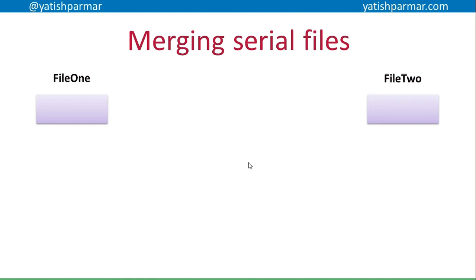So first of all, if you want to merge two serial files, remember that the data is not in any kind of order — it's just being appended to the file as it comes along. It's quite a straightforward thing when merging serial files. The first thing that needs to be done before any kind of merge is to check whether the file is empty or not. Obviously, if it's empty, then there's no merge that needs to take place.